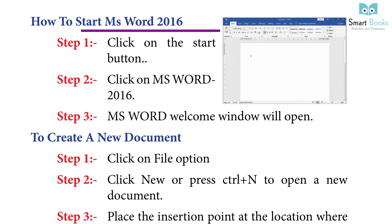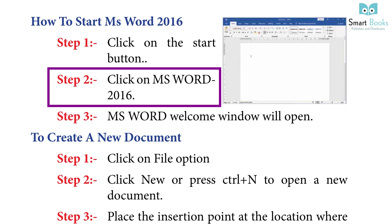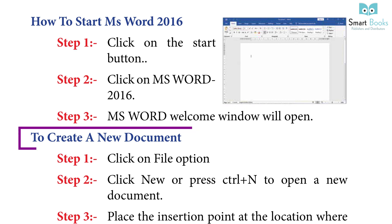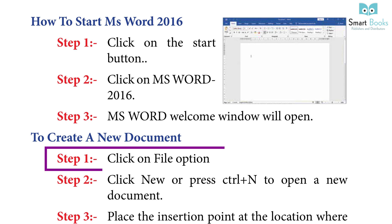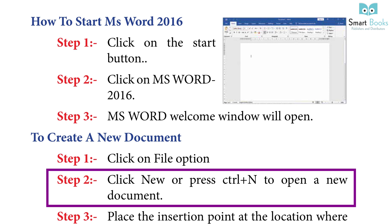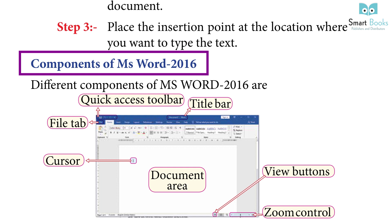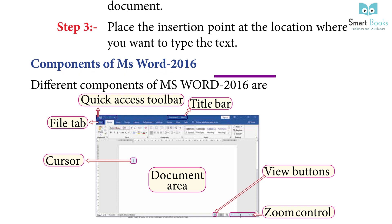How to start MS Word 2016: Step 1 — click on the Start button. Step 2 — click on MS Word 2016. Step 3 — the MS Word window will open. To create a new document: Step 1 — click on the File option. Step 2 — click New or press Ctrl+N to open a new document. Step 3 — place the insertion point at the location where you want to type the text.